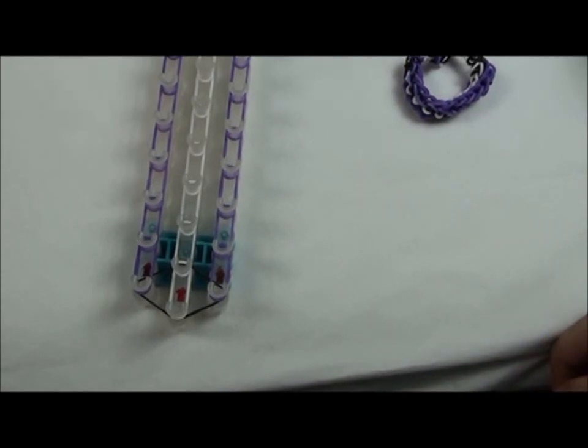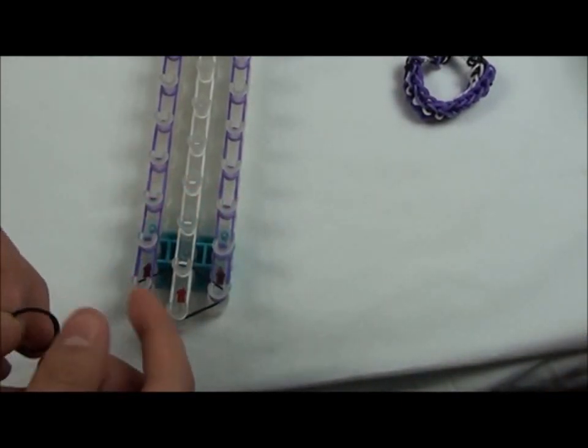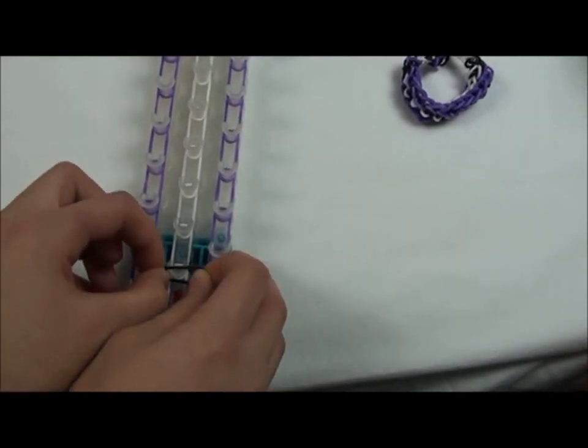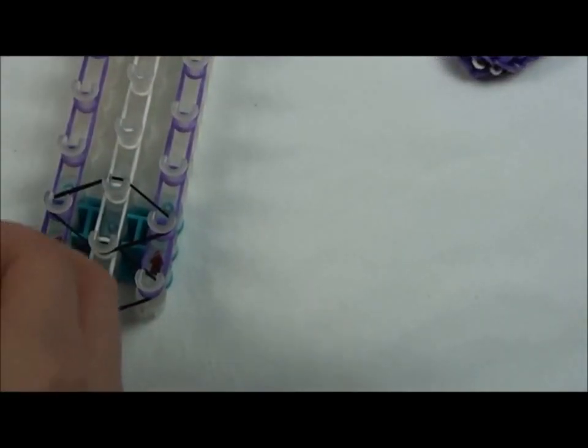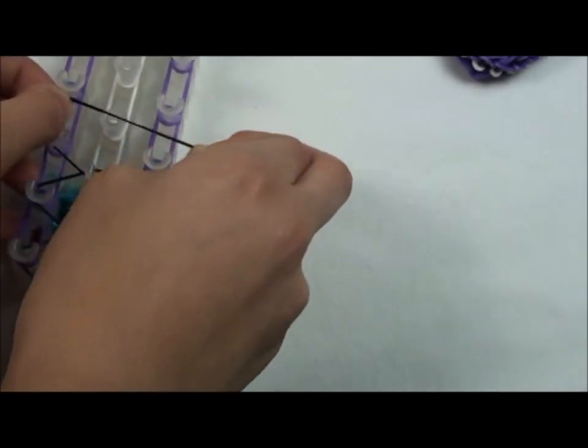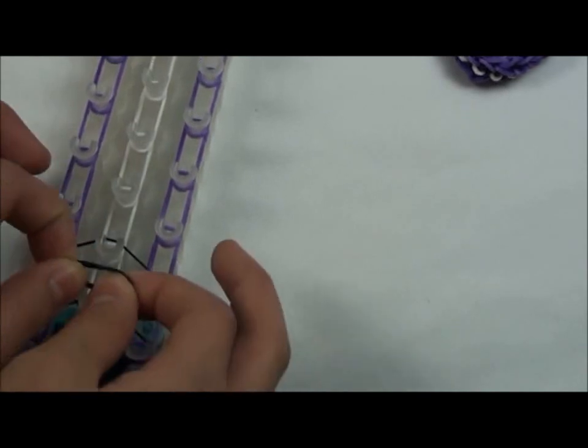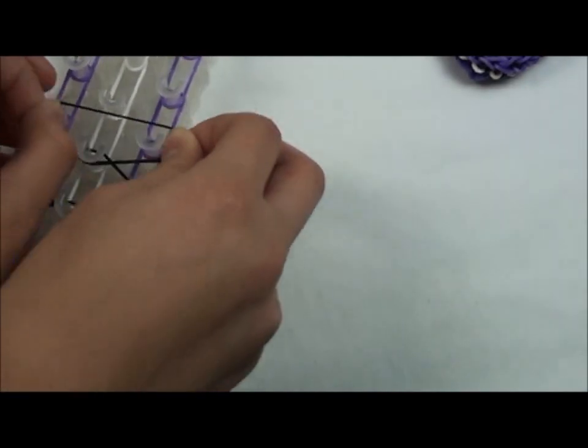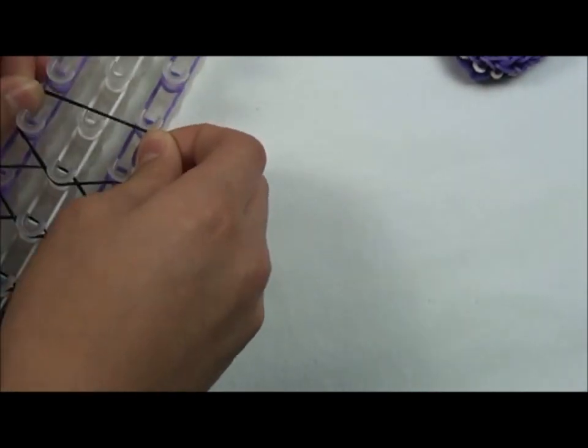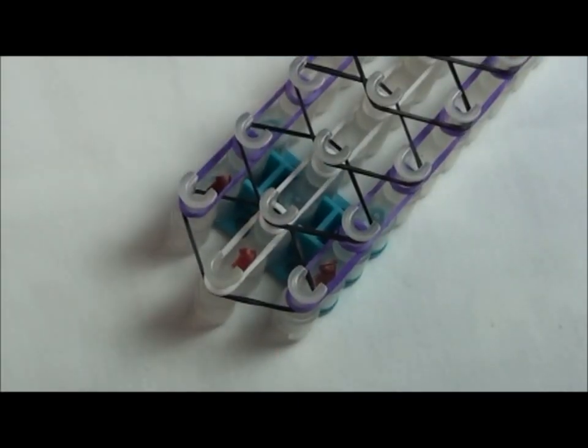The next step is to take the black rubber band and just like the first one that you laid, make a diamond and continue this until the end. On the last pin you're going to make a half diamond. This is how it should look like when you're done.